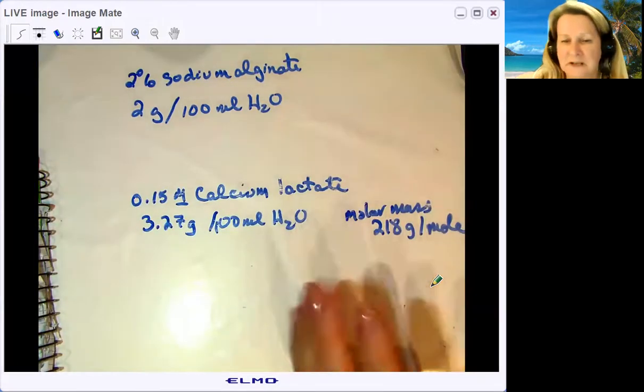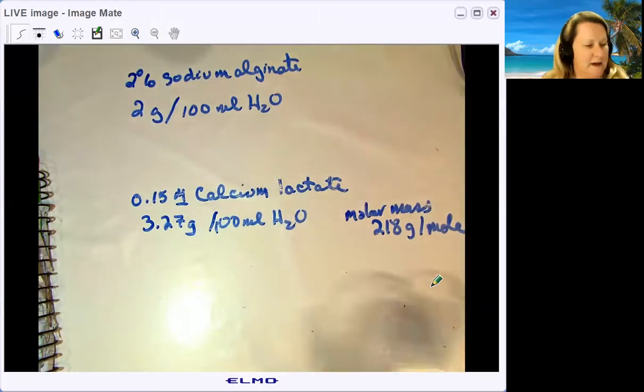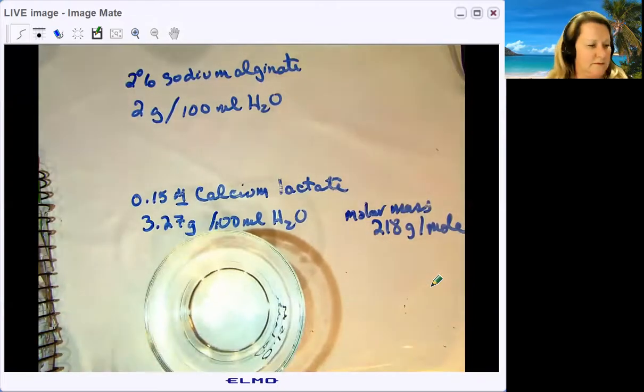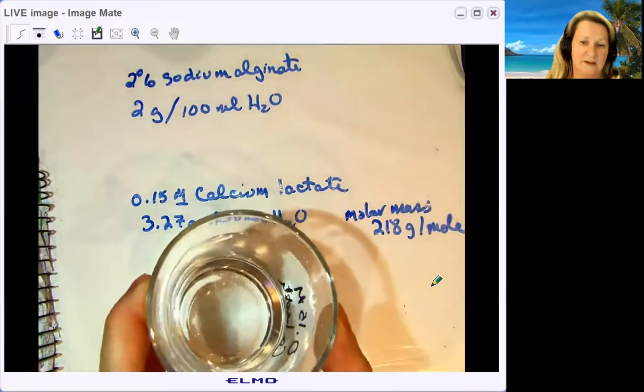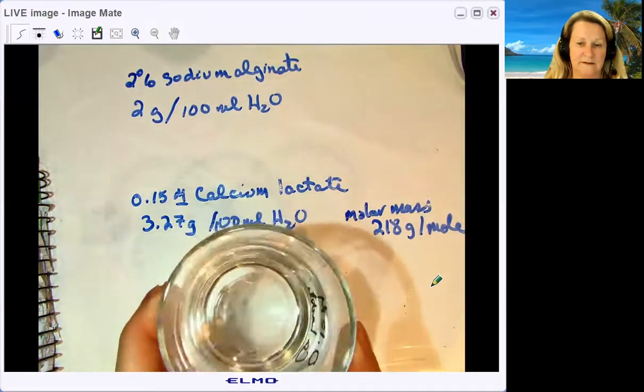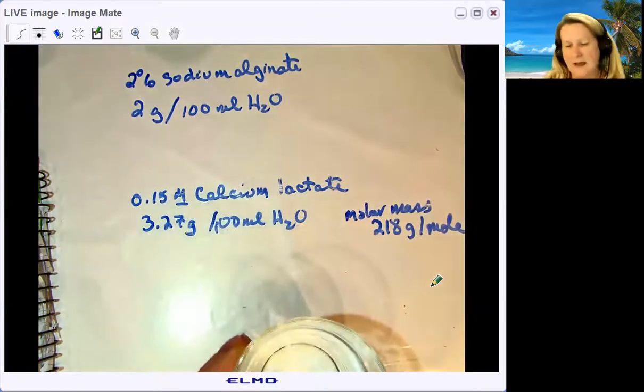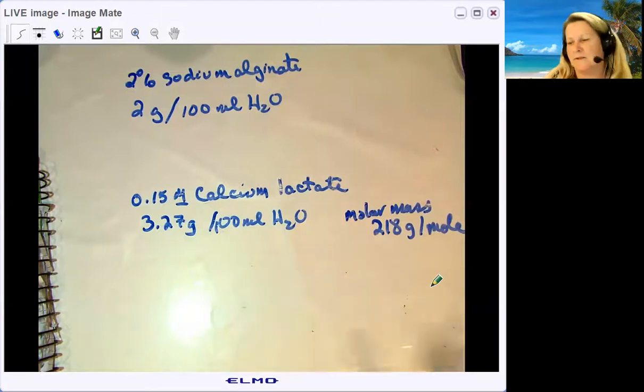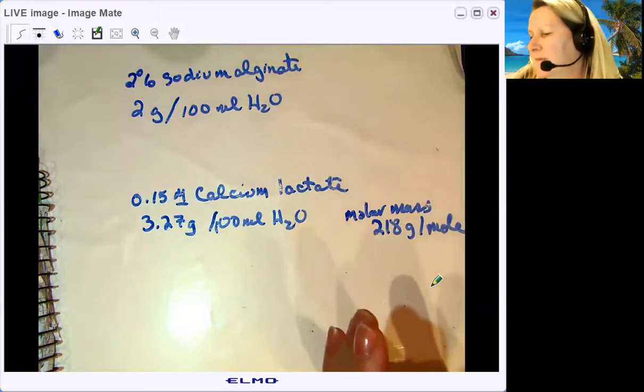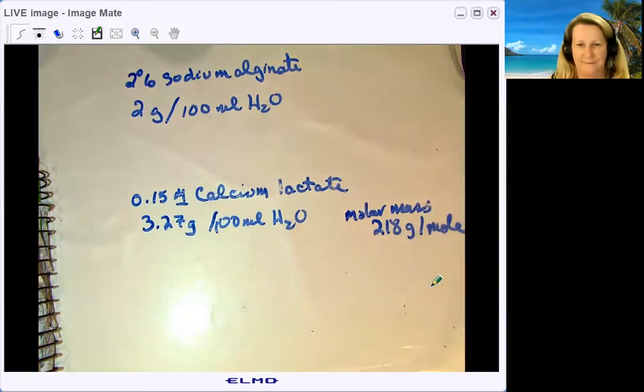Calcium lactate is much easier to get in solution. This is what 3.27 grams of calcium lactate in 100 mL of water looks like. It's completely clear and dissolves really quickly. I make them both up on the same day, even though the calcium lactate goes into solution right away, so I have them both handy.